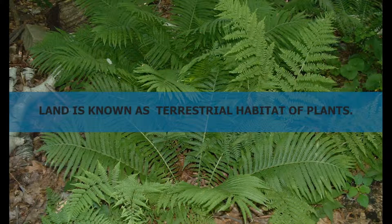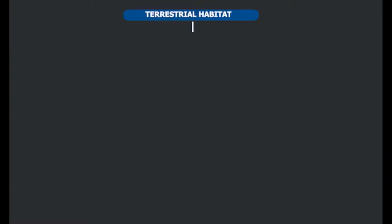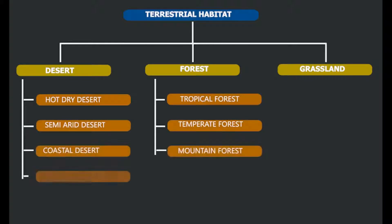Land is known as the terrestrial habitat of plants. Availability of water varies on land from place to place. For example, water is less available in deserts compared to forests. Based on water availability, terrestrial habitats are divided into three categories.